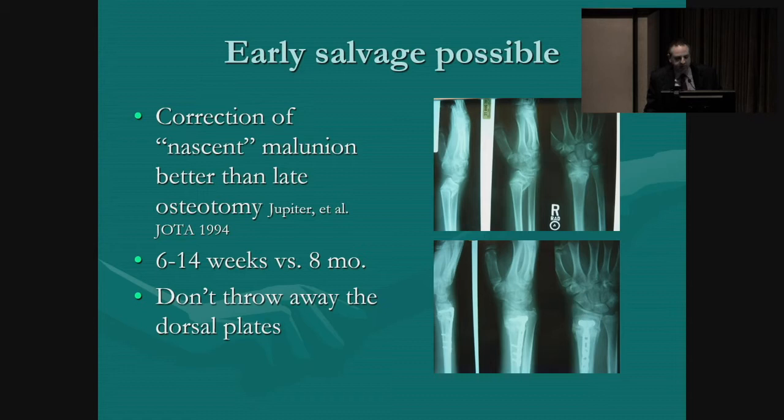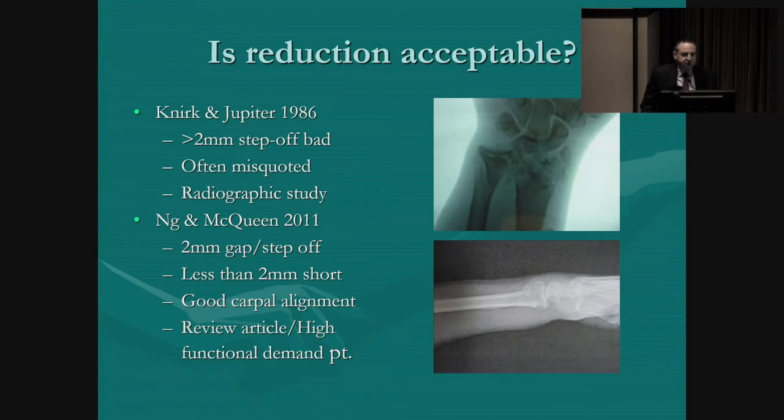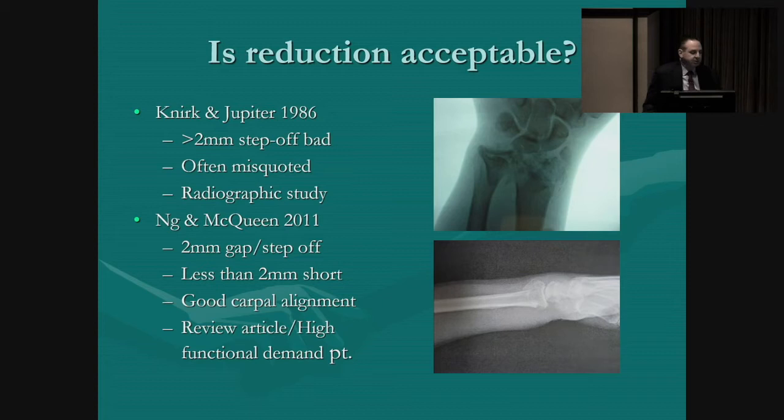The next question is: is a reduction acceptable? The article that gets quoted and often misquoted is a study from Nurk and Jupiter in 1986, showing that greater than two millimeter articular step-off was bad. This was purely a radiographic study and didn't look at any type of functional outcome. The study by Anne McQueen in 2011 showed again that a two millimeter gap and step-off were bad — you should try to get them less than two millimeters.